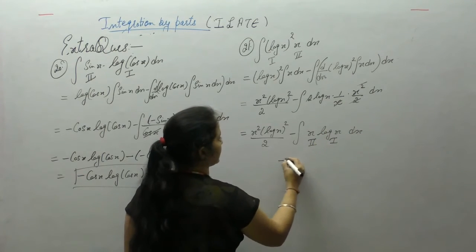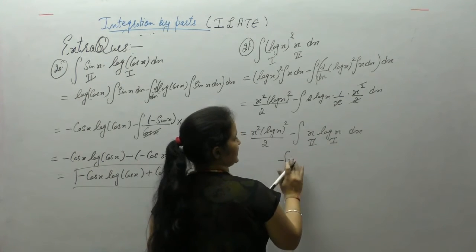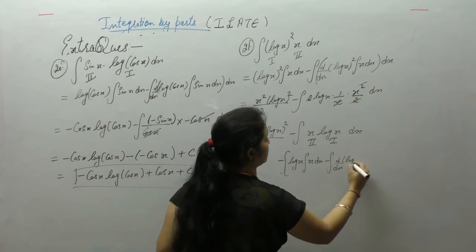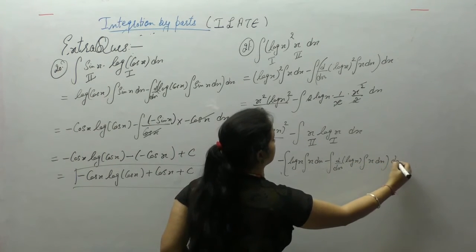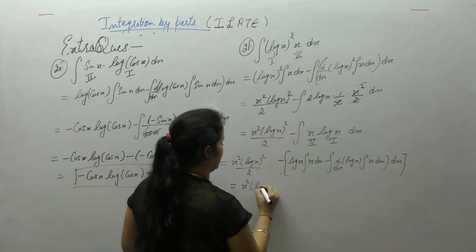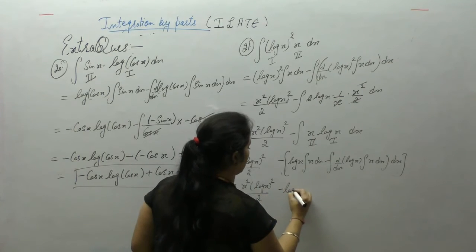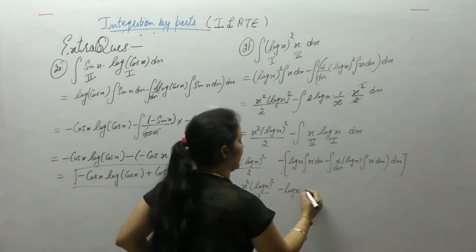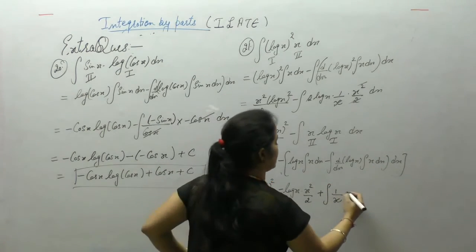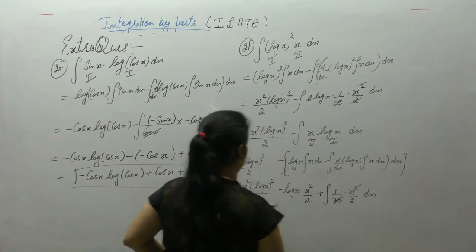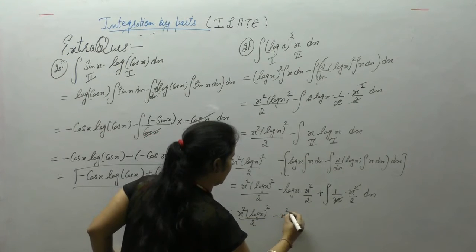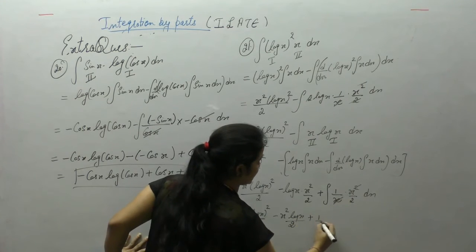Again apply integration by parts on integral of x·log(x). First is log(x), integral of second is x² upon 2. Derivative of first is 1 upon x, integral of second is x² upon 2. So we get x²·[log(x)]² upon 2, minus log(x)·x² upon 2, plus integral — applying power rule, x² upon 2. Minus minus gives plus. Derivative of log x is 1 upon x and integral of x is x² by 2. Final result: x²·[log(x)]² upon 2, minus x²·log(x) upon 2, minus x² upon 4, plus c.